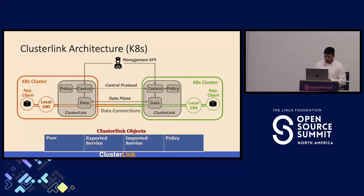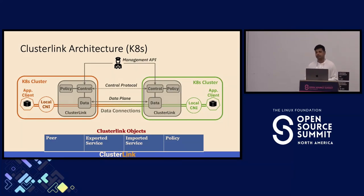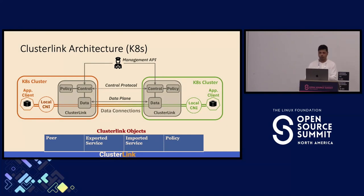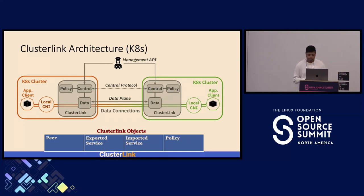ClusterLink defines four entities as abstractions for expressing connectivity needs. First is a peer, which represents the remote ClusterLink gateway and necessary metadata for creating protected connections. Second is an exported service, which represents an application service hosted in a local cluster and exposed to a remote cluster — this could be a pod or set of pods defined as a service. Third, an imported service represents a remote application service running in a different cluster that is imported to the present cluster. Fourth is policy, which represents communication rules enforced for all cross-cluster communication at each ClusterLink gateway.